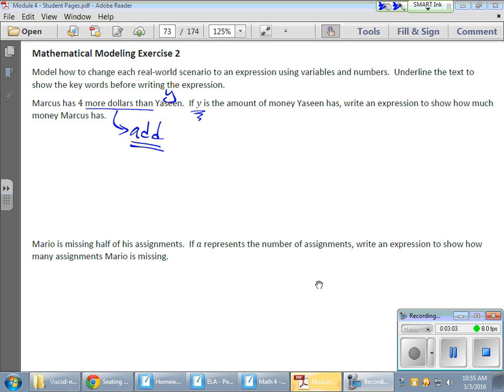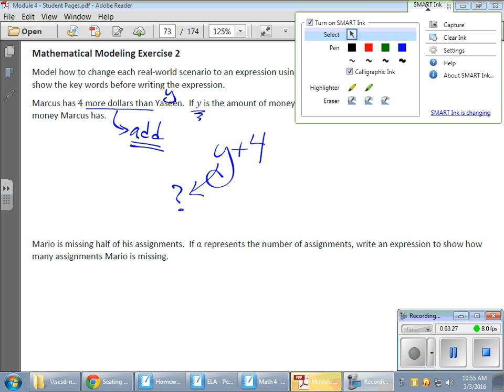Now, if Marcus has 4 more dollars than Yaseen, so whatever Yaseen has, we're going to add 4 to that, and that represents what Marcus has. So there's my expression. So whatever Yaseen has, whatever Y can be substituted for, whatever value that is, add 4, and that's what Marcus has. Cool. One more.